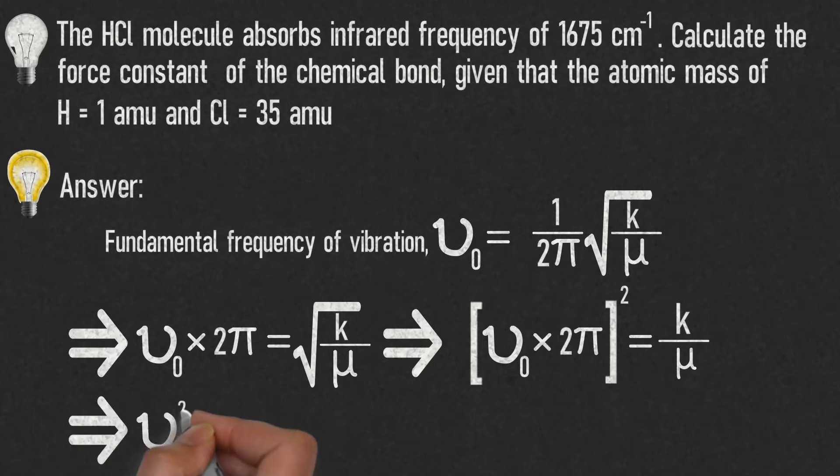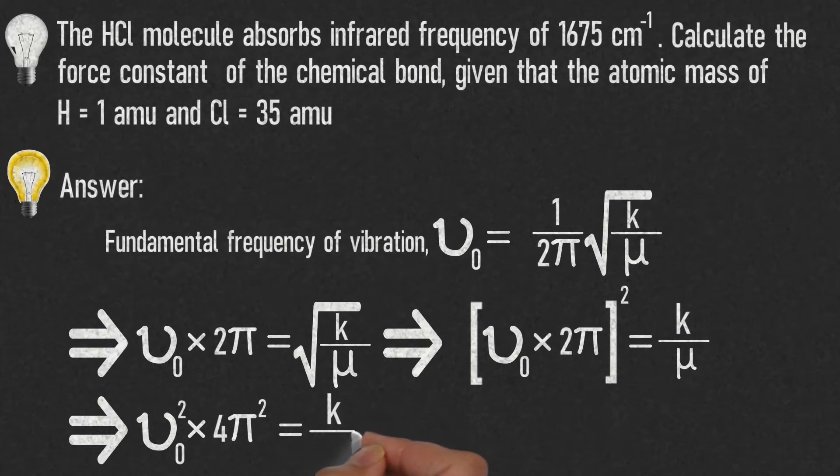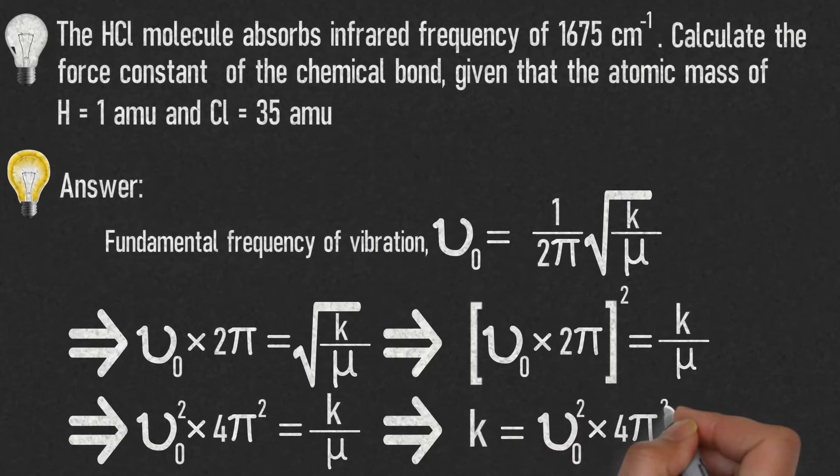That implies ν₀² × 4π² = k/μ, which means k = ν₀² × 4π² × μ. Let us pin this equation, which we will use later.